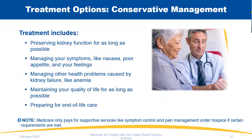There is also the option of conservative management for end-stage renal disease. Treatment includes preserving kidney function as long as possible, managing symptoms like nausea and poor appetite, managing other health problems caused by kidney failure such as anemia, maintaining quality of life, and preparing for end of life. Medicare only pays for supportive services like symptom control and pain management under hospice if certain requirements are met.